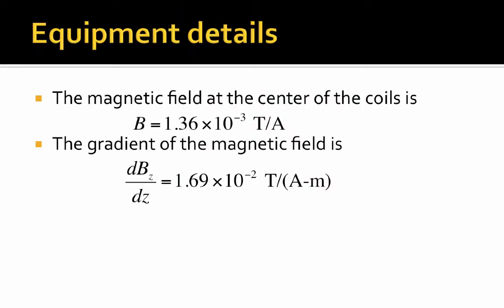The equipment details that are important to know can be found in the manual, and also here, the magnetic field is 1.36 times 10⁻³ tesla per amp. In other words, if you multiply that by current, you'll have a conversion factor for the magnetic field.